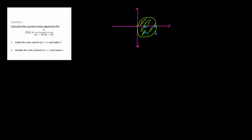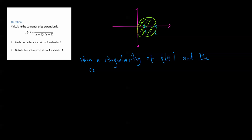This is an interesting scenario, and it's best highlighted when a singularity of f(z) — and there are 2 — and the center of the circle coincide. So this is the situation that is happening here: the center of the circle that we're expanding in, and one of the singularities, are coinciding.